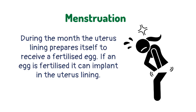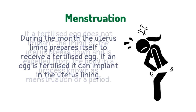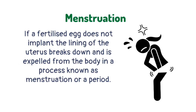During the month, the uterus lining prepares itself to receive a fertilized egg. If an egg is fertilized, it can implant in the uterus lining. If a fertilized egg does not implant, the lining of the uterus breaks down and is expelled from the body in a process known as menstruation, or a period.